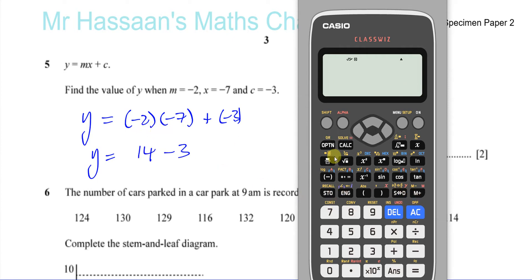Negative 2, times negative 7, plus negative 3. And it should give you exactly what I wrote down there, which is 11. So just put it exactly as you write it down to make a quick check.